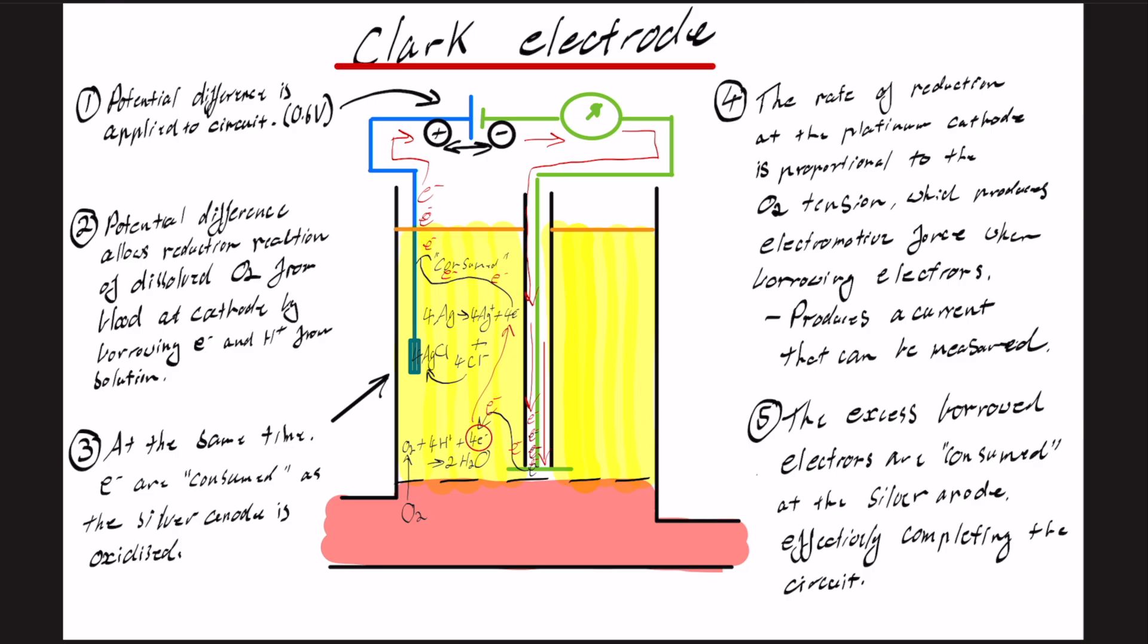And then as it flows through, it's measured by our galvanometer and measures a current. So effectively, oxygen partial pressure is proportional to current.